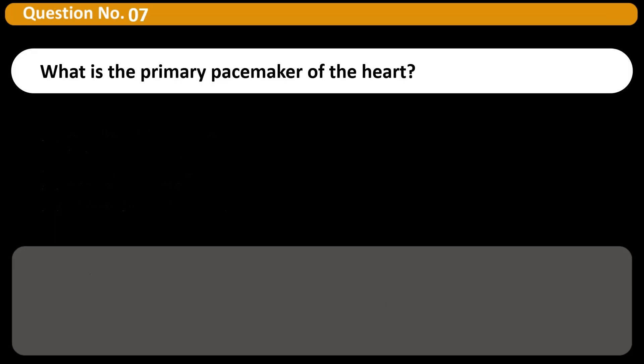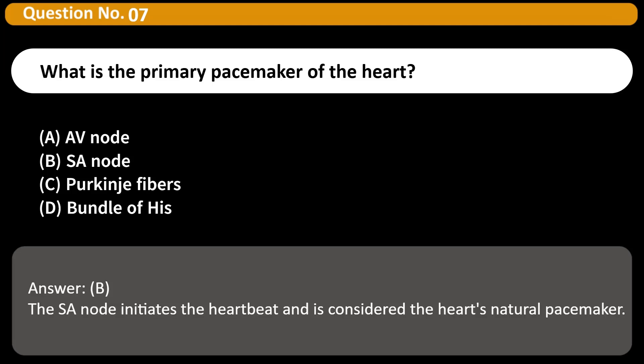What is the primary pacemaker of the heart? A. AV node B. SA node C. Purkinje fibers D. Bundle of his Answer B. The SA node initiates the heartbeat and is considered the heart's natural pacemaker.